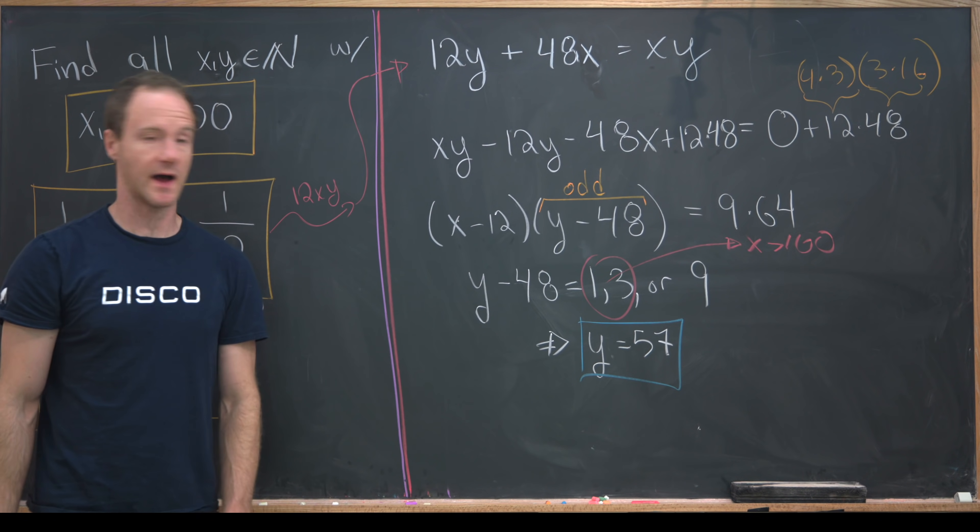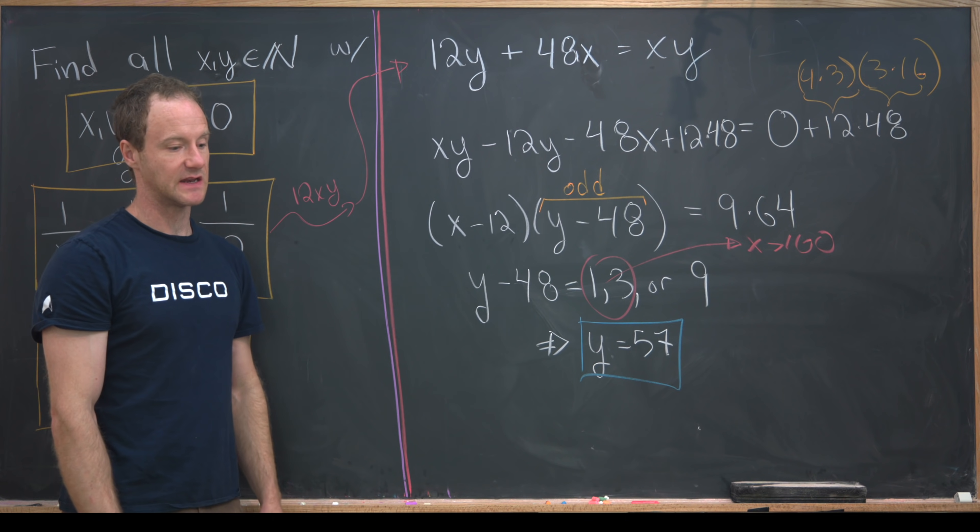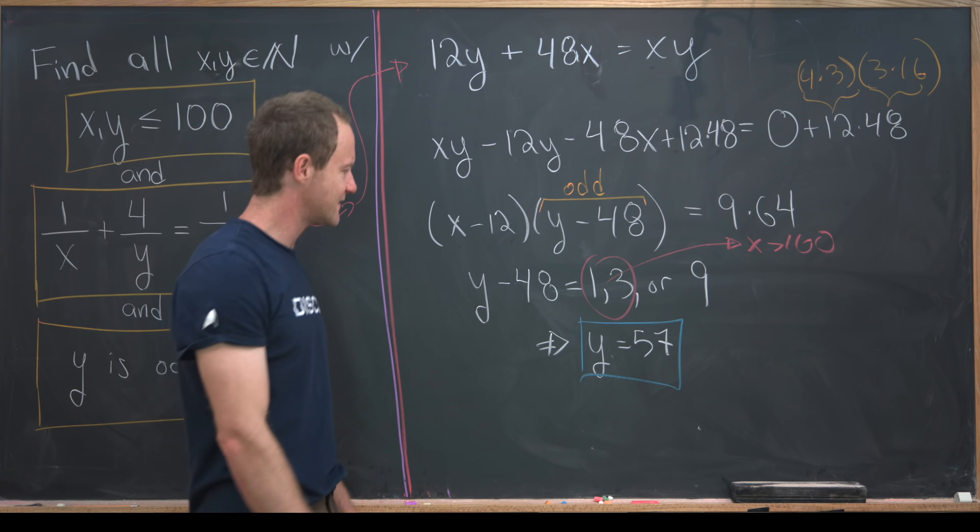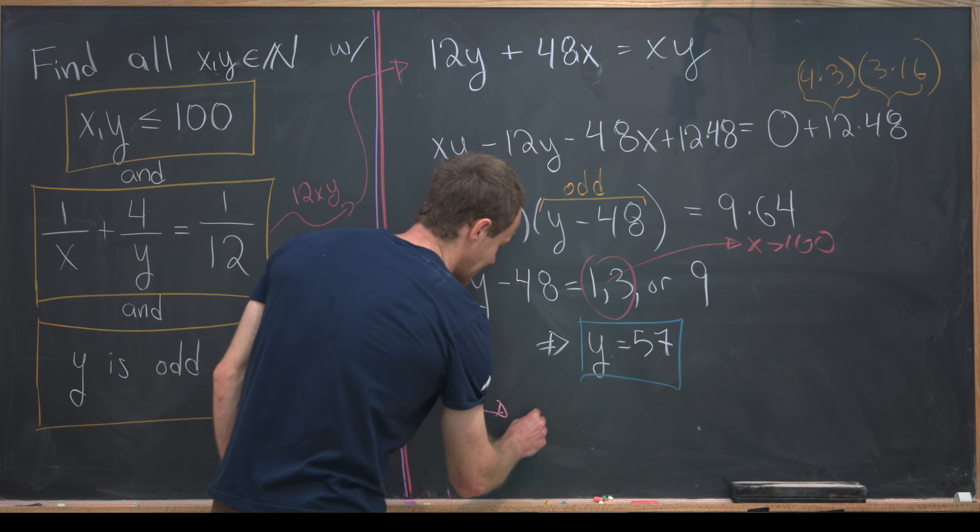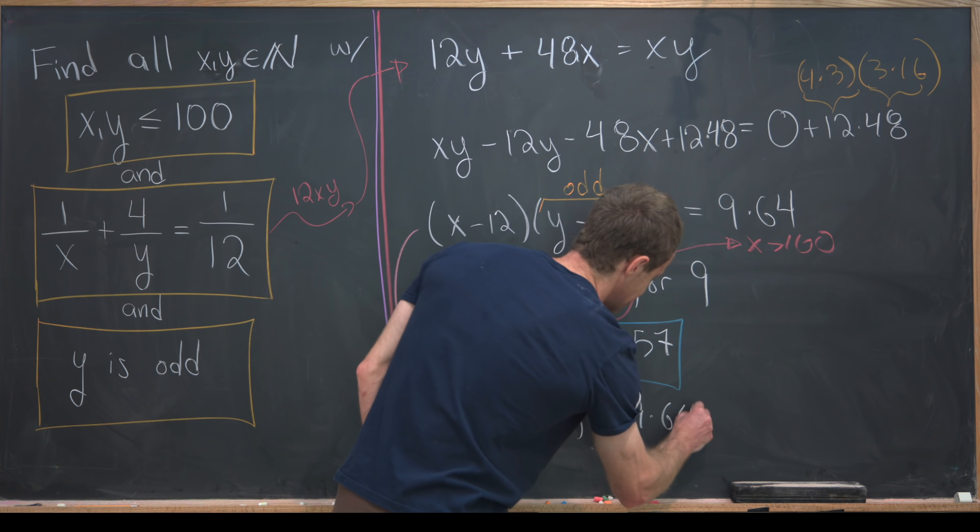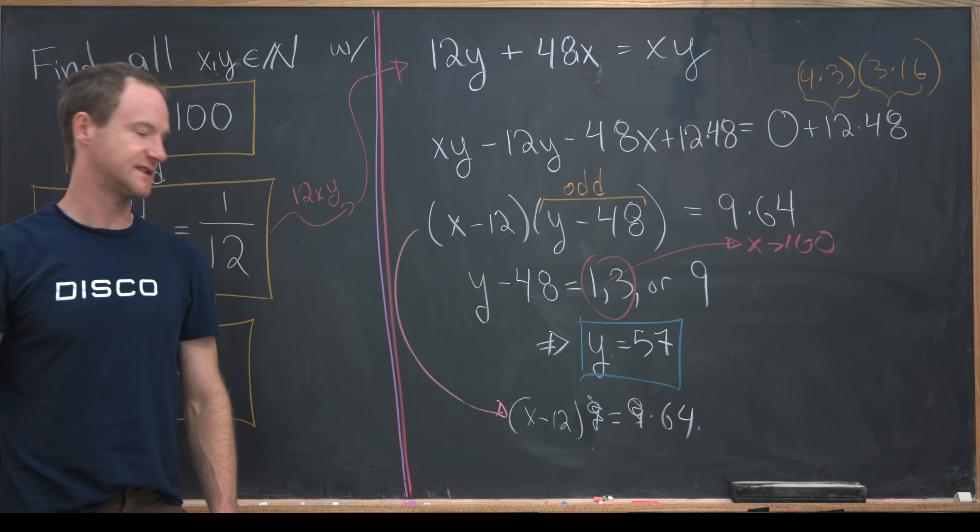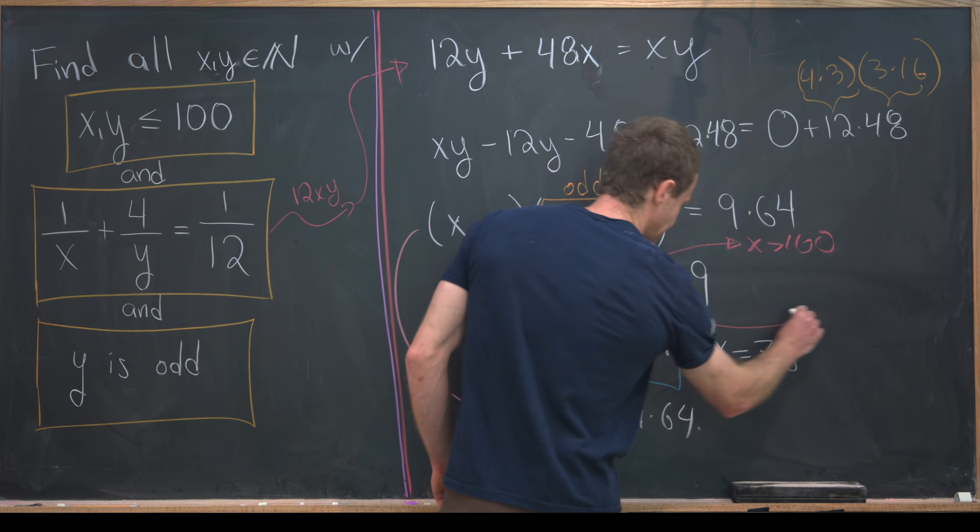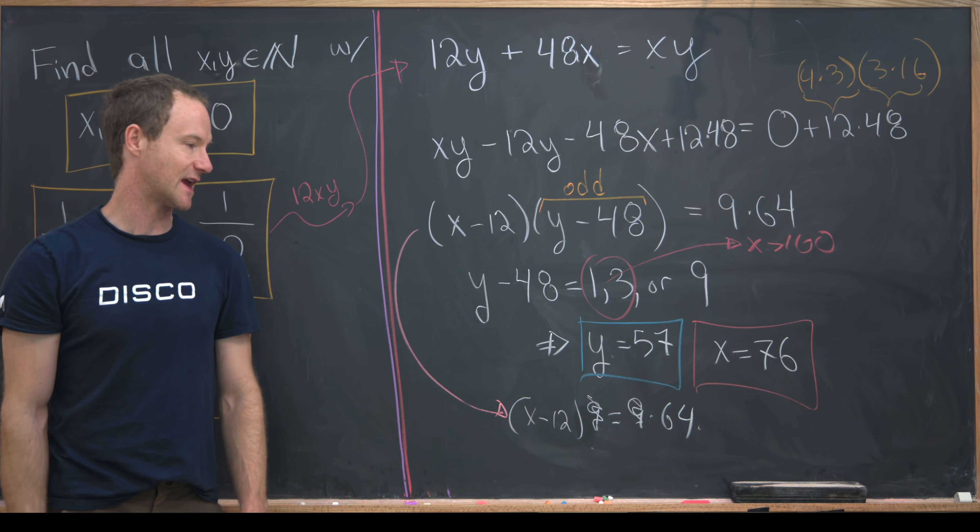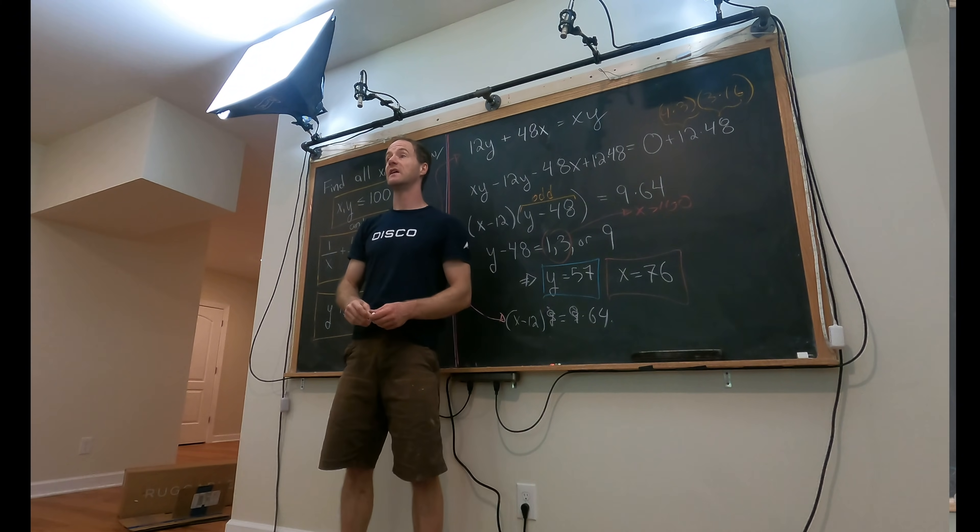Now we've got our value for y. We can plug that value of y into any of these equations and then gain the value for x. So maybe we'll take advantage of the fact that y minus 48 is equal to 9. That means x minus 12 times 9 is equal to 9 times 64, which tells us that x minus 12 is equal to 64. And thus, x is equal to 76. That gains both our value for x and y that satisfies this equation with these two conditions. And that's a good place to stop.